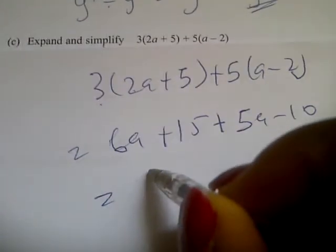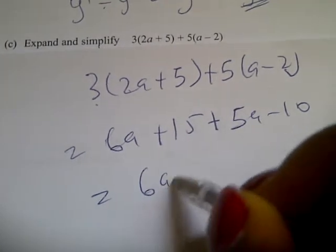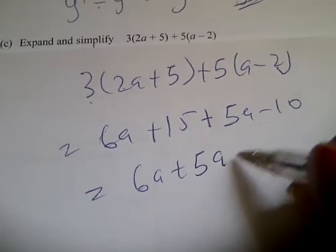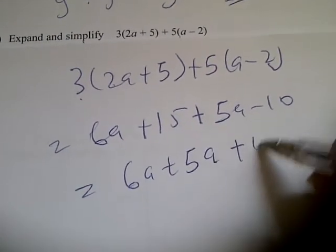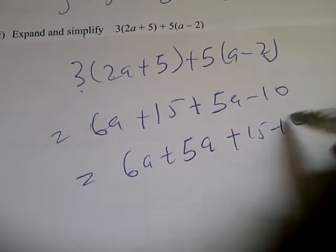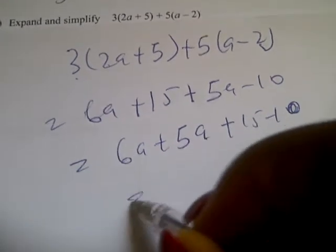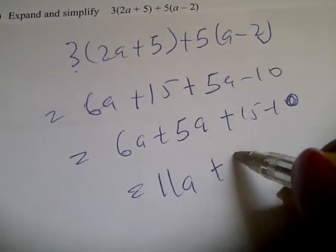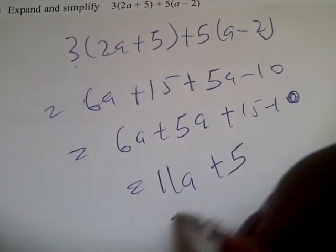...10. Gathering like terms: 6a plus 5a, plus 15 minus 10, which gives 11a plus 5.